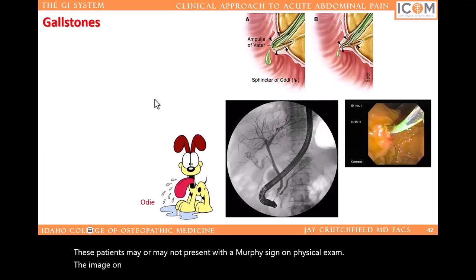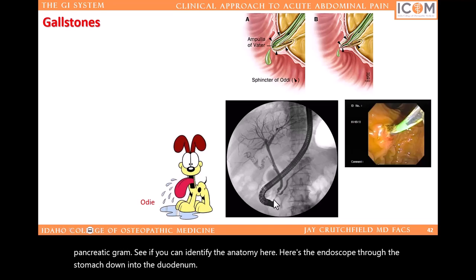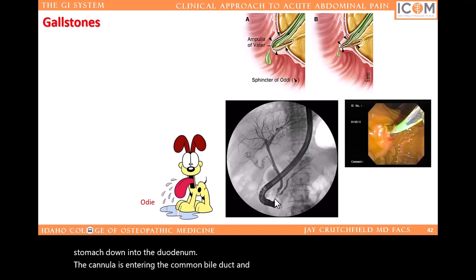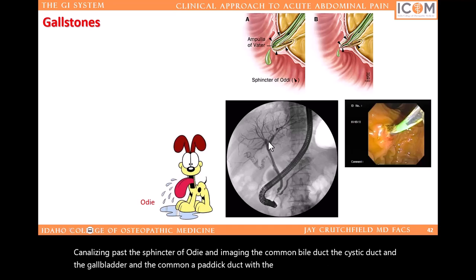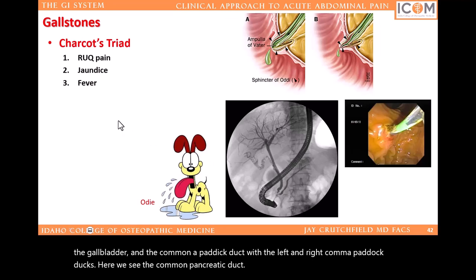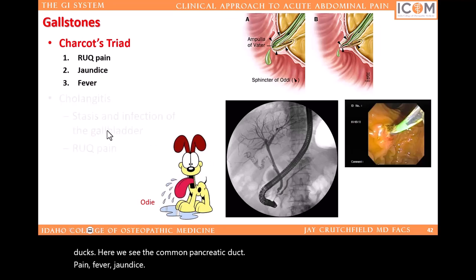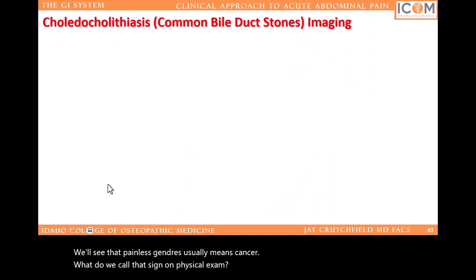The image on the lower middle area shows an ERCP — an endoscopic retrograde cholangiopancreatogram. Here's the endoscope through the stomach down into the duodenum. The cannula is entering the common bile duct and common pancreatic duct near the ampulla of Vater, cannulating past the sphincter of Oddi, and imaging the common bile duct, the cystic duct, the gallbladder, and the common hepatic duct with the left and right common hepatic ducts. Here we see the common pancreatic duct. Pain, fever, jaundice, hepatitis, gallstones, cancer — painless jaundice usually means cancer. We call that sign on physical exam the Courvoisier sign.